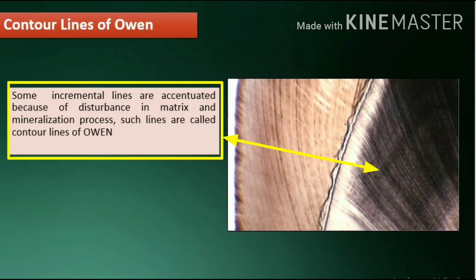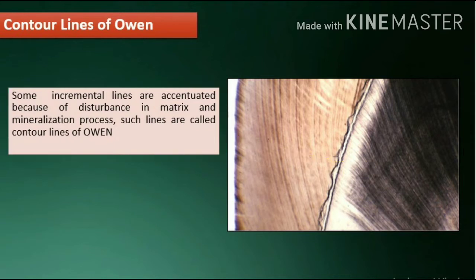Some incremental lines are accentuated because of disturbances in the matrix and mineralization process. Such lines are called contour lines of Owen.